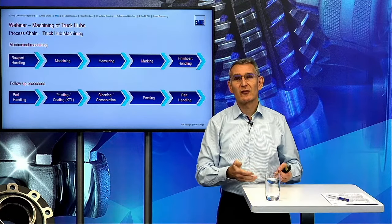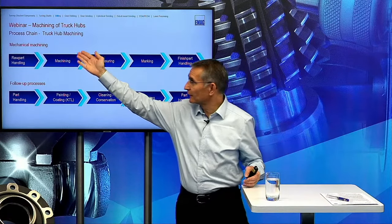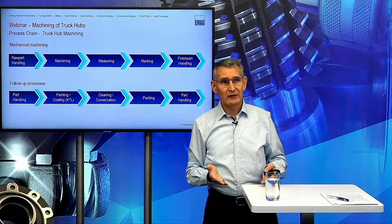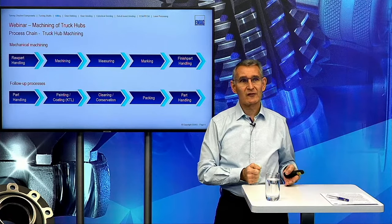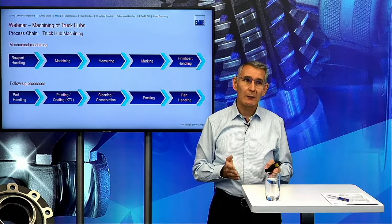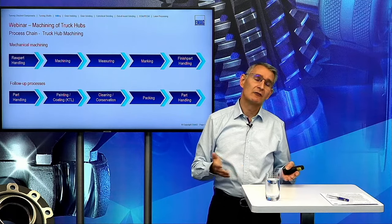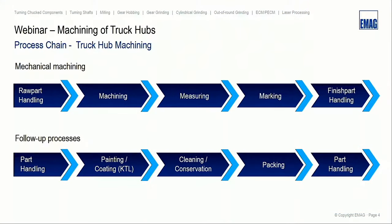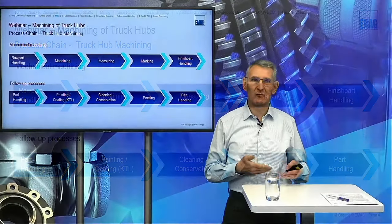If we look at the process chain for machining such hubs, we can divide it into mechanical machining and follow-up processes. Mechanical machining starts with raw part handling after casting, then machining of the hub, then measuring, marking, and finished part handling. Follow-up processes include painting and coating, cleaning and conservation. For cleaning, we have our own laser cleaning solution with EMAC Laser Tech in Heubach — we can laser-clean the bearing seats in the inner diameters of the hubs.